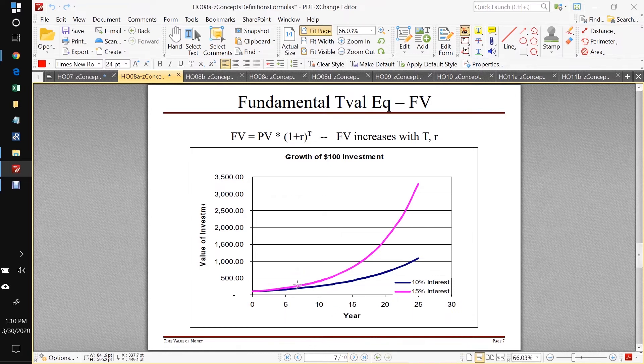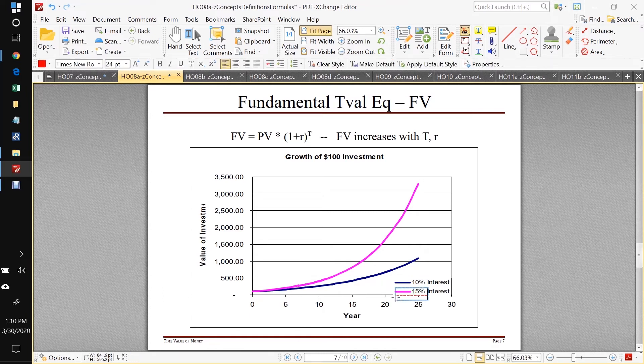And what makes our money grow faster? Two things as shown here, one is the more time we can let our money grow, the more money we're going to have, we have time here on the x axis, and the value of our investment on the y axis. So that's one thing that helps us more just more time. Second thing that helps us is higher interest rate here. So we see with the 15% interest, our money grows much faster.